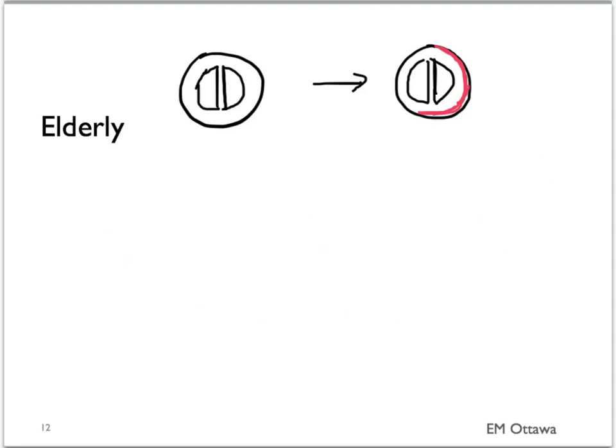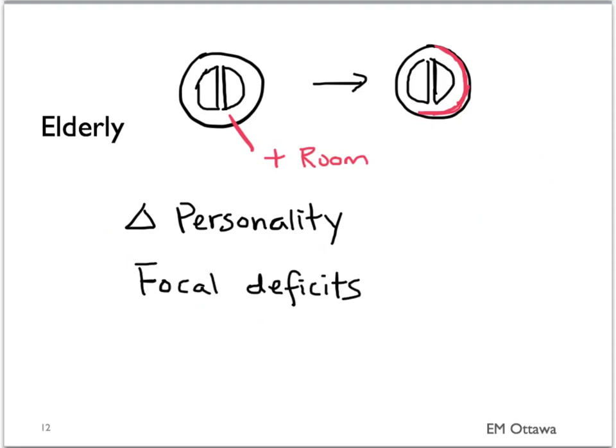In elderly patients, since they have more brain atrophy, there is more time for the blood to accumulate before causing symptoms. Therefore, they can present with slow, chronic personality changes. Depending on where the subdural hemorrhage is, it can also cause focal neurological deficits. They can also present with increasing falls or increased confusion. The presentation of subdural hemorrhage in this age group can be very subtle.